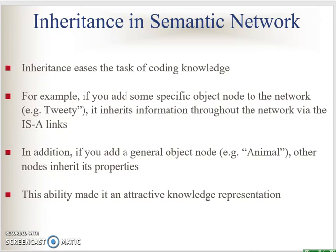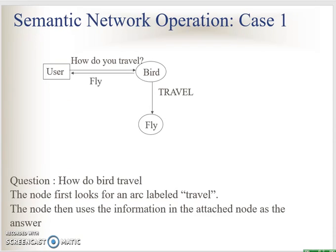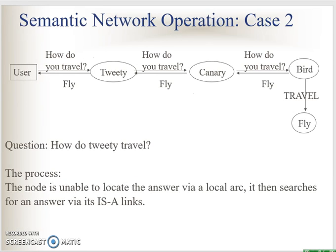So how about inheritance in semantic network? It's like object-oriented programming whereby you can see the inheritance between the objects. From this network, let's look at the first case — the user asks the system: how does a bird travel? The system will look into the information within the semantic network graph and find that the bird travels by flying. If the network has been expanded, we can ask how does tweety travel? Inferring from the graphical representation, we know that tweety is a canary and canary flies.